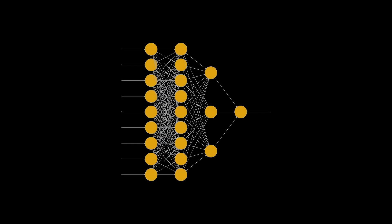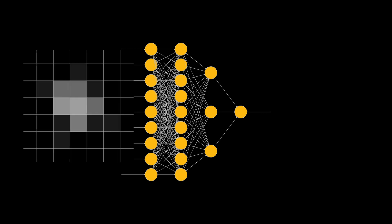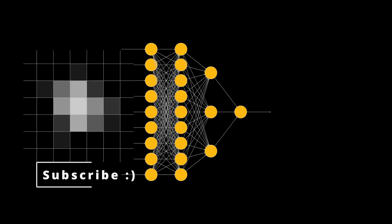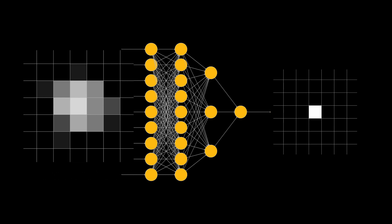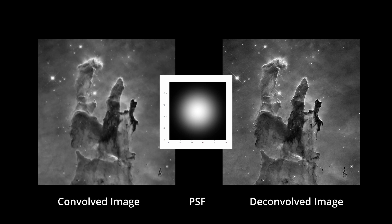So what is this tool? It's a neural network that uses a grid of pixels from a blurry image to predict the central pixel of a sharpened image. In other words, it is a model that tries to figure out how to deconvolve an image that has been convolved with a point spread function, one pixel at a time. And it did pretty well.